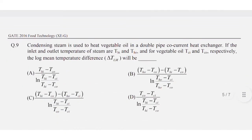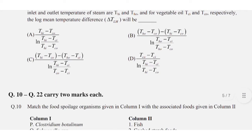Question number nine: condensing steam is used to heat vegetable oil in a double pipe co-current heat exchanger. If the inlet and outlet temperatures of steam are T_hi and T_ho, and for vegetable oil T_ci and T_co respectively, the log mean temperature difference delta T_lm will be — option D is correct.